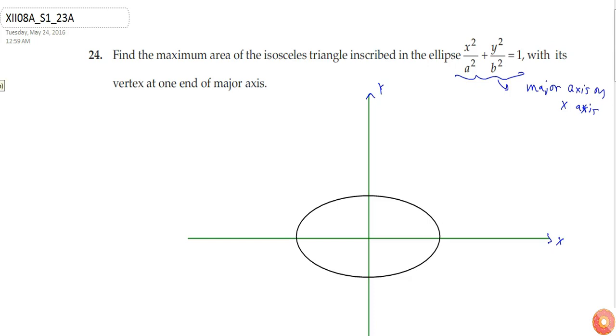Consider that the isosceles triangle inscribed in the ellipse has vertex at one end of major axis. So this is (a, 0), here (-a, 0), here (0, b), and this is (0, -b). I know that two sides of an isosceles triangle are equal.